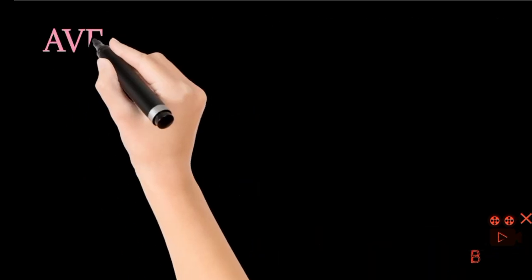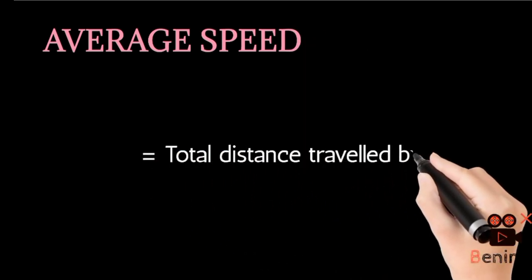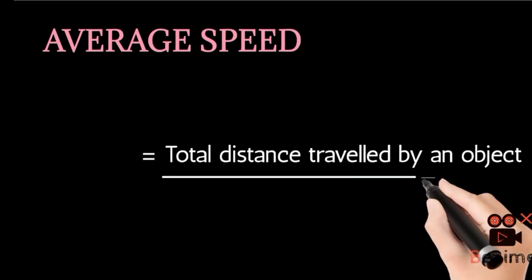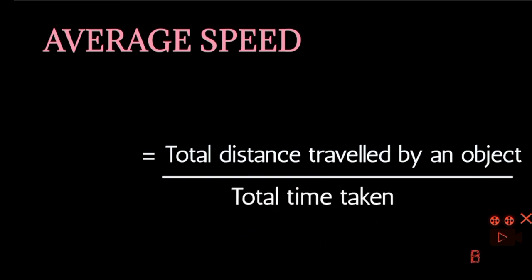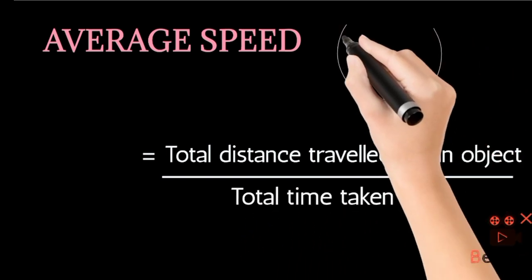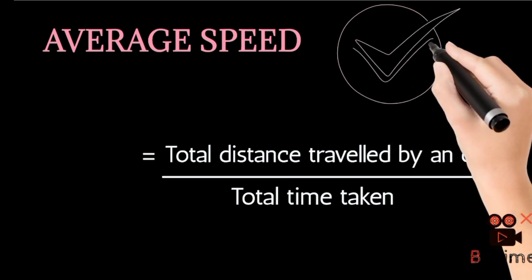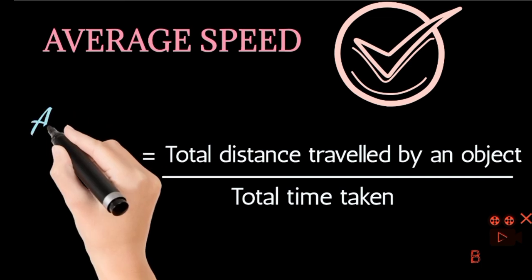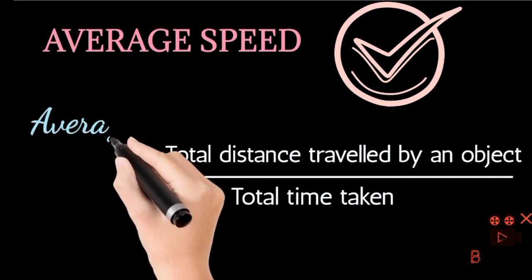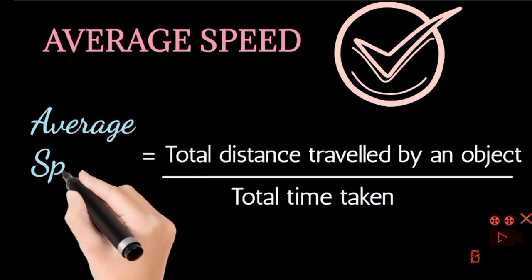Now let's proceed. Average speed. अब हम जानेंगे average speed किसे कहते हैं. The total distance traveled by an object divided by total time taken. Total distance को total time से divide करेंगे, then that will be the average speed of any object.